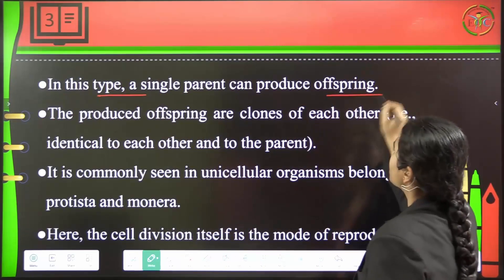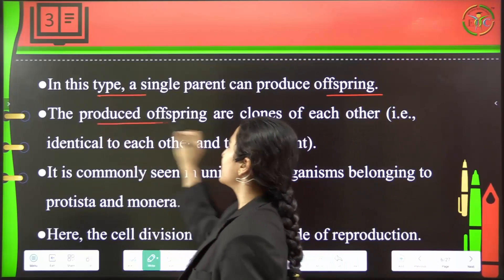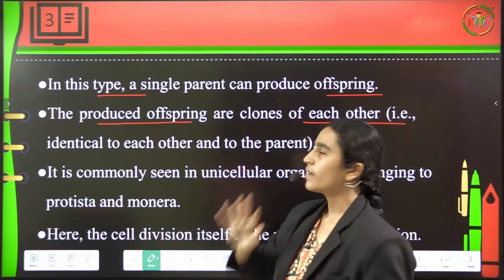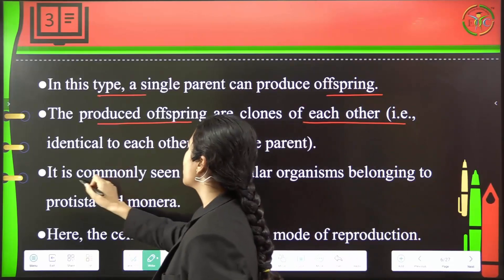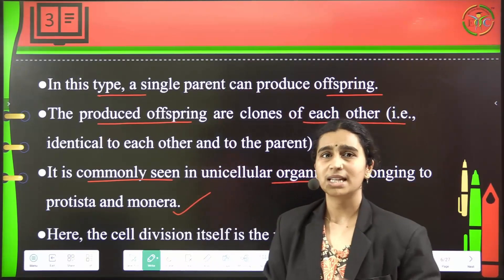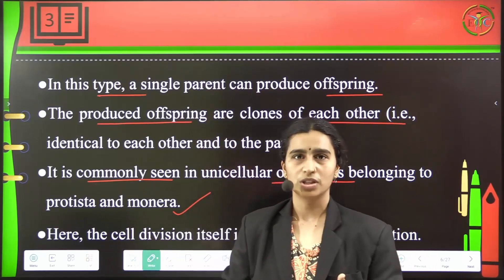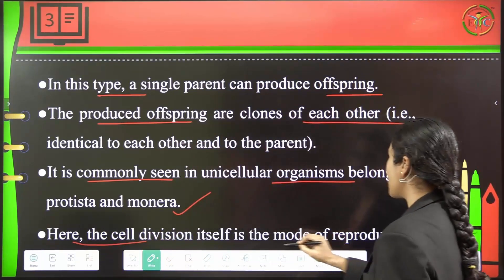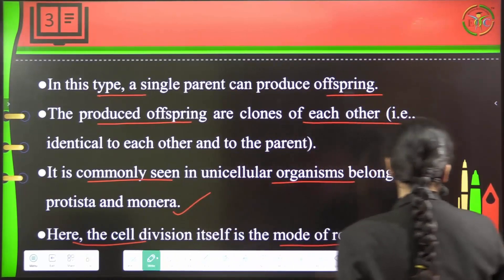In asexual reproduction, a single parent can produce the offspring. There is only one single parent which is capable of giving rise to its offspring. The produced offspring are clones of each other — they are like identical twins — because there is no involvement of another individual, and therefore they are copies of their parents. This is commonly seen in unicellular organisms belonging to Protista and Monera. They undergo fission, binary fission, or fragmentation to give rise to their offspring. Cell division itself is the mode of reproduction in unicellular organisms.